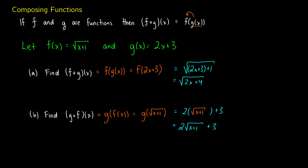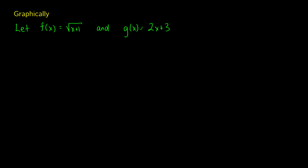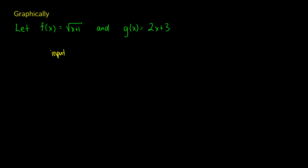So this is how we compose functions, and we can think of this like a function machine. I'm going to keep this as our example going forward into our graphical representation. Let's do function machine notation first. Basically we get an input and we're going to do f dot g of x, which is the same as f of g of x. The input is going to be x for simplicity.